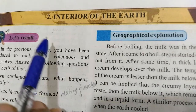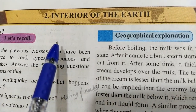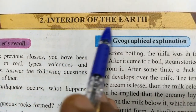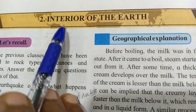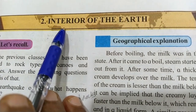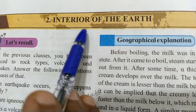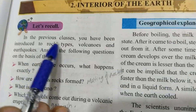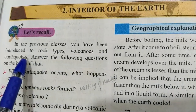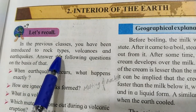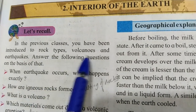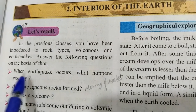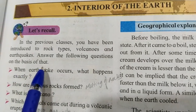Good morning everyone. Today we are going to study the second chapter of geography, which is 'Interior of the Earth.' Interior means inside — what is there inside the crust of the earth. In previous classes you have been introduced to rock types, different types of rocks, volcanoes, and earthquakes. We have to answer some questions on the basis of that.